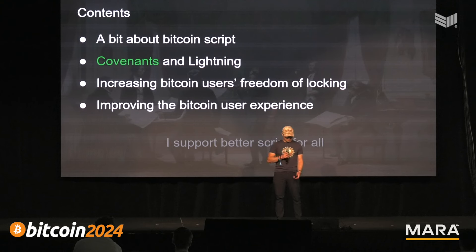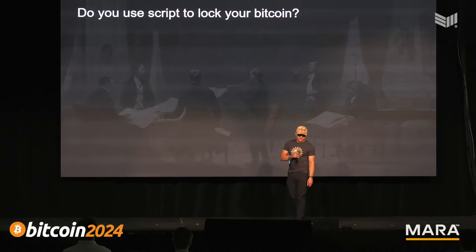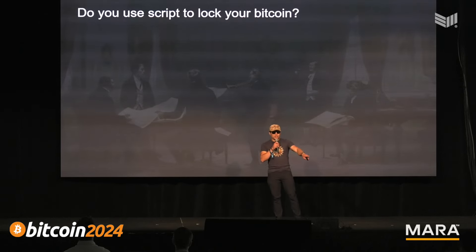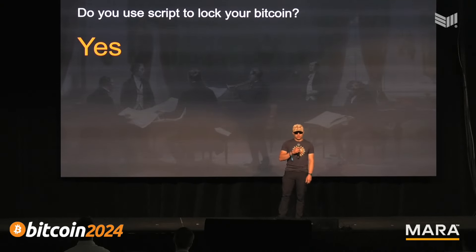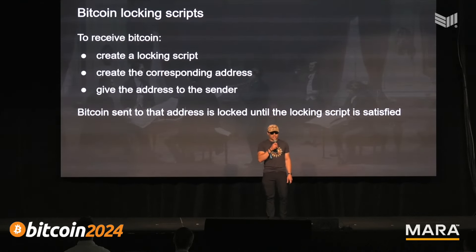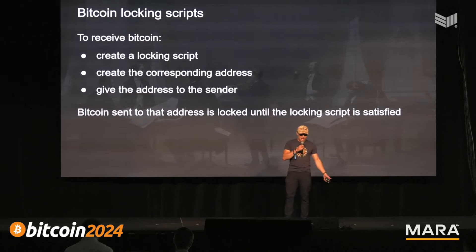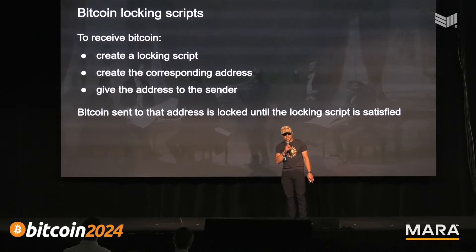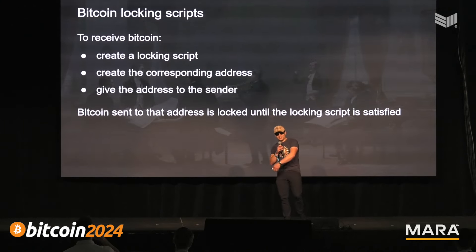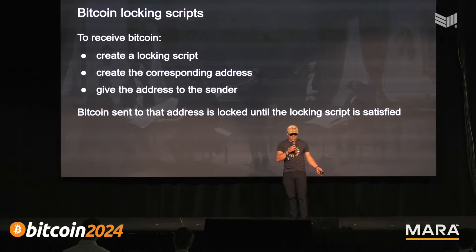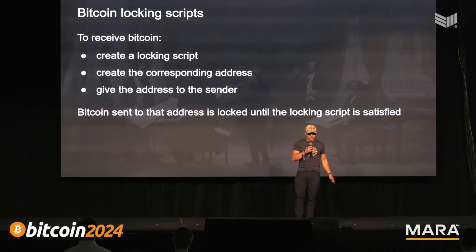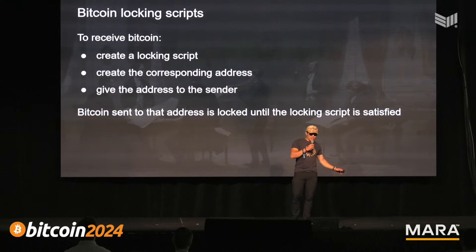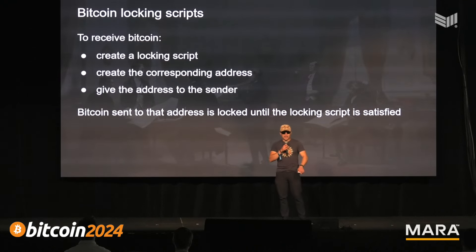I support better script for all because I'm a Bitcoin communist. First, a question: do you use script to lock your Bitcoin? If you have Bitcoin, you use scripts to lock it — there's no other way to do it. When you receive Bitcoin, you make a locking script. You may not know this because your wallet does it for you, but you make a locking script, you make an address, you give the address to a sender, the sender's wallet deconstructs the address back into a locking script, they send some Bitcoin to that script, and it's locked until that script is satisfied. That's how Bitcoin works — Bitcoin in the lightning network works that way, Bitcoin in wrapped Bitcoin at BitGo works that way — all Bitcoin everywhere is locked by a locking script.